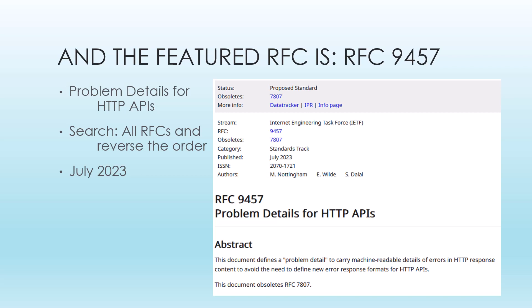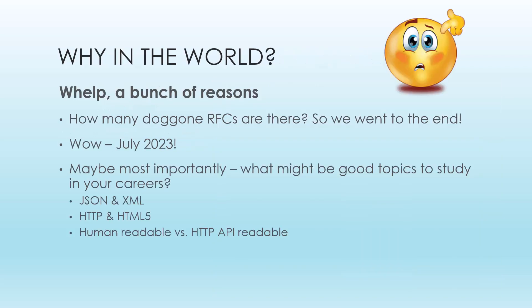And that's a hint as to why I decided to pick this strange, weird RFC 9457. But more on that in a second. You can see the abstract down there — it says the document defines a problem detail to carry machine-readable details of errors in HTTP response content, to avoid the need for a new error response format for HTTP APIs. What is RFC 9457, and why would we look at it?